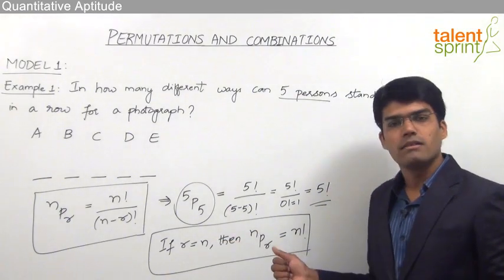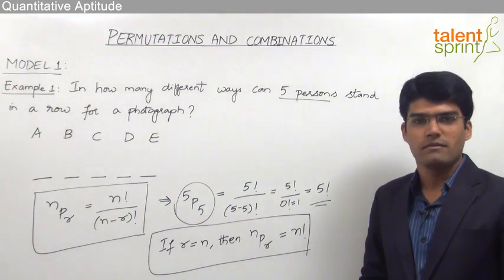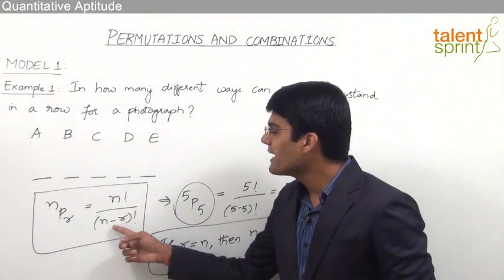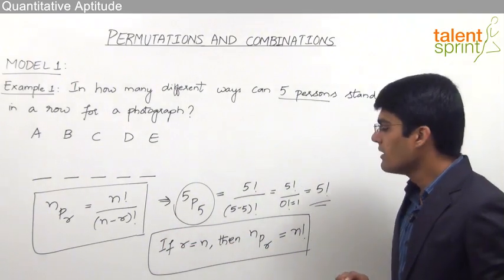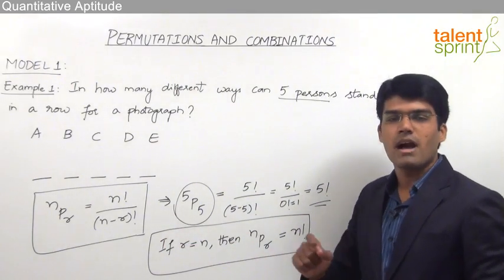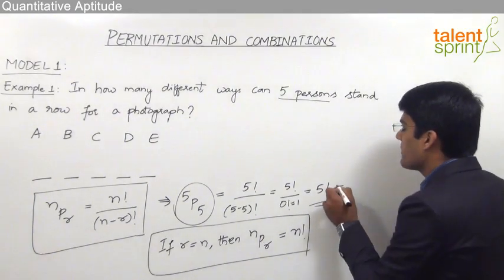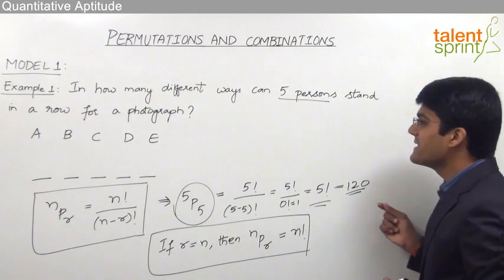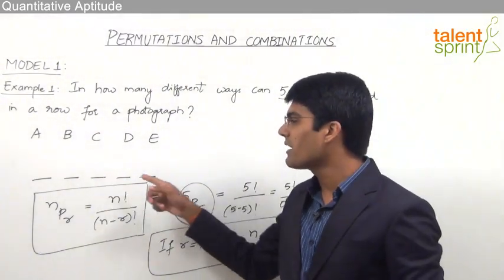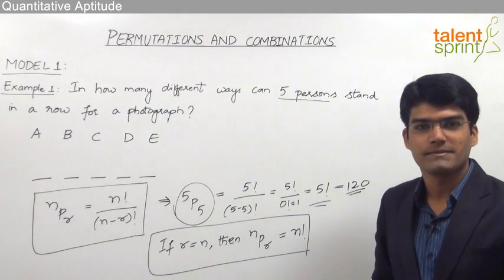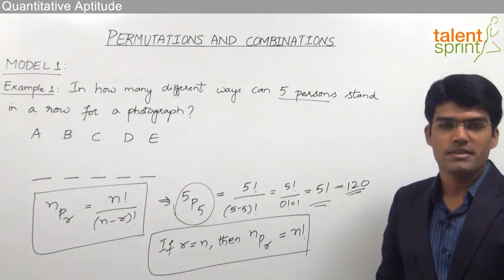For example, 12P12 equals 12 factorial, or 8P8 equals 8 factorial, because the denominator will have 0 factorial in each case. So if r equals n, nPr equals n factorial. The answer for this question is 5 factorial, which equals 120. So there are 120 different ways in which these 5 persons can be arranged in a row for a photograph.